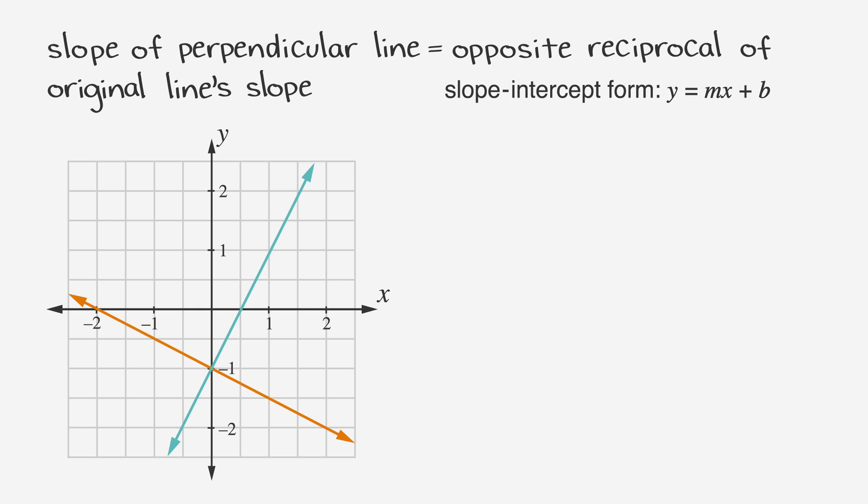To find the slope of a perpendicular line, take the slope of your given line, in this case 2, and write it as a fraction, which makes our slope 2 over 1. Now, flip the fraction to find the reciprocal. Here, it becomes 1 half. Finally, add a negative sign in front of it to find the opposite reciprocal. So, one possible perpendicular line of our original line is y equals negative 1 half x minus 1.